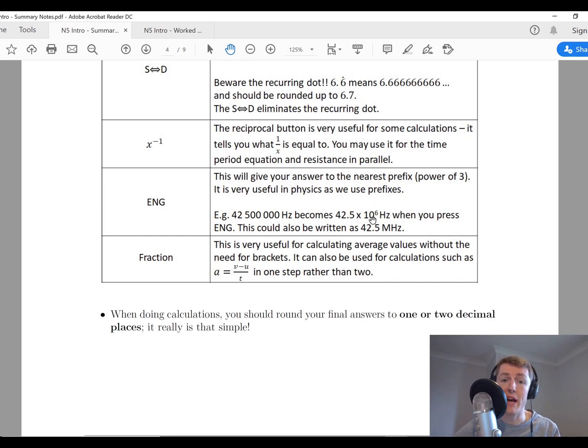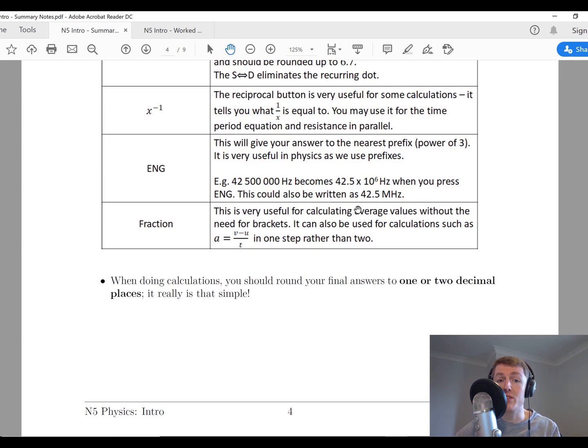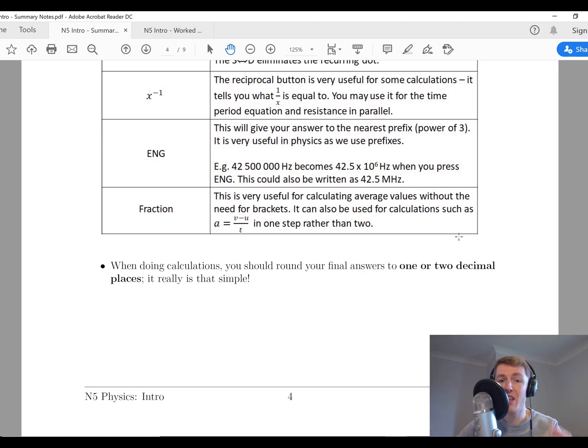The last button to make you aware of is just the fraction button, which I'm sure you've probably all used before in things like maths. This is useful for calculating averages we do use it, and it can be useful for things like the acceleration equation and equations where there's a division as well, rather than just you pressing the divide button.